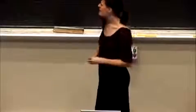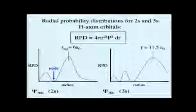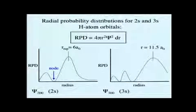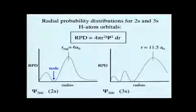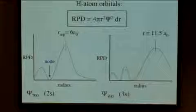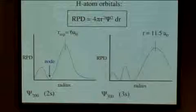Another thing to point out in these two graphs is that we do have nodes, and we figured out last time we calculated how many nodes we should have in a 2s orbital, and in terms of radial nodes, we expect to see one node. And how many nodes do you see in the 3s orbital? Two. Good.